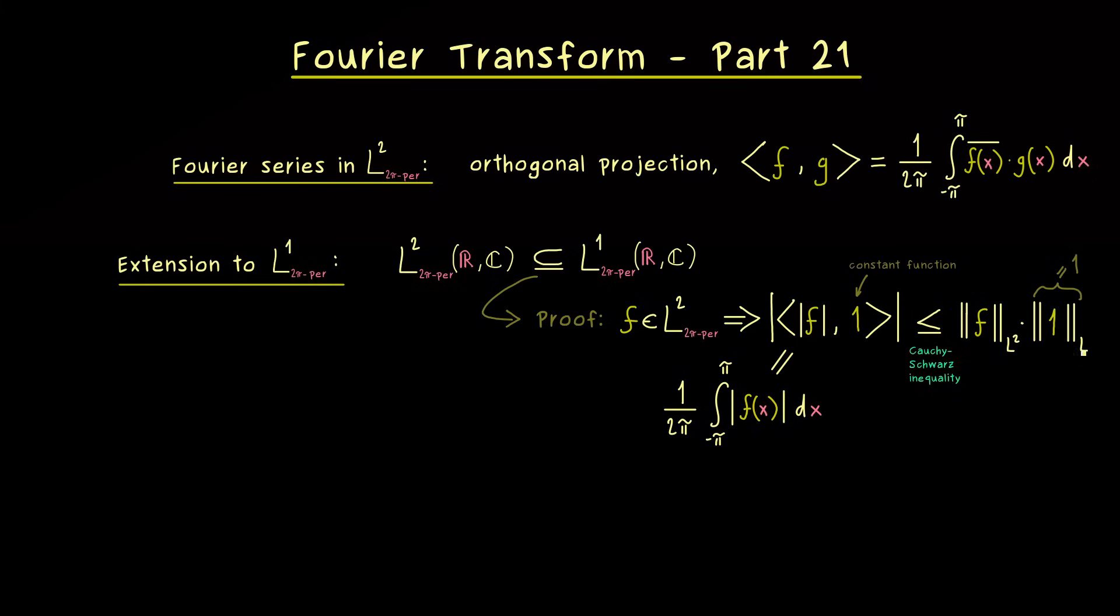And now since the right hand side here is a finite number the left hand side is also a finite number. In other words here we have an estimate between the L1 norm and the L2 norm. And exactly this inequality represents the subset relation.